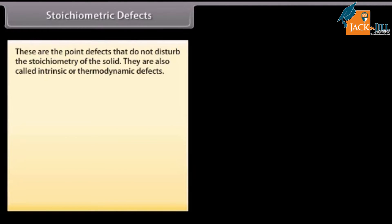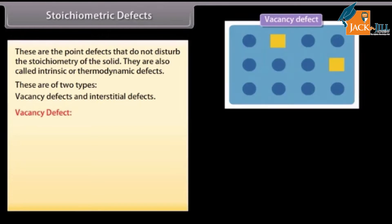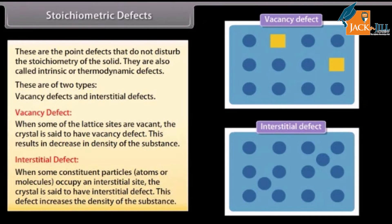Stoichiometric defects are point defects that do not disturb the stoichiometry of the solid. They are also called intrinsic or thermodynamic defects, and are of two types: vacancy defects and interstitial defects. A vacancy defect occurs when some lattice sites are vacant, resulting in a decrease in the density of the substance. An interstitial defect occurs when some constituent particles — atoms or molecules — occupy an interstitial site, which increases the density of the substance.